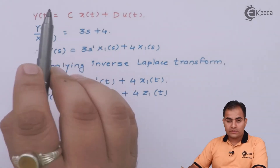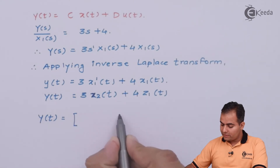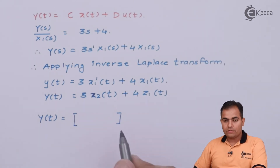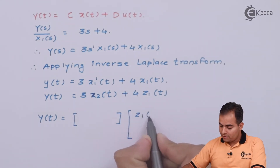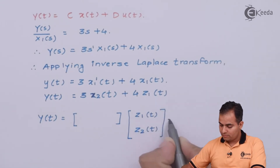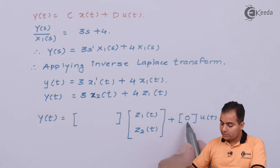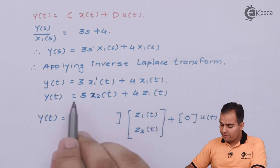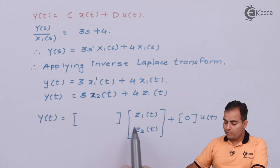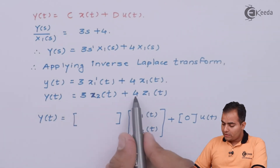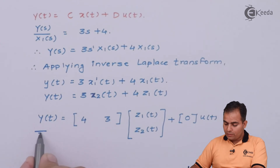We now form the output state variable matrix. y(t) equals matrix C (1×2 row vector) multiplied by the state vector [z1(t); z2(t)], plus matrix D (1×1) multiplied by u(t). Since u(t) does not appear in the y(t) equation, D = 0. From y(t) = 4·z1(t) + 3·z2(t), the C matrix is [4, 3]. This completes the output state variable model.